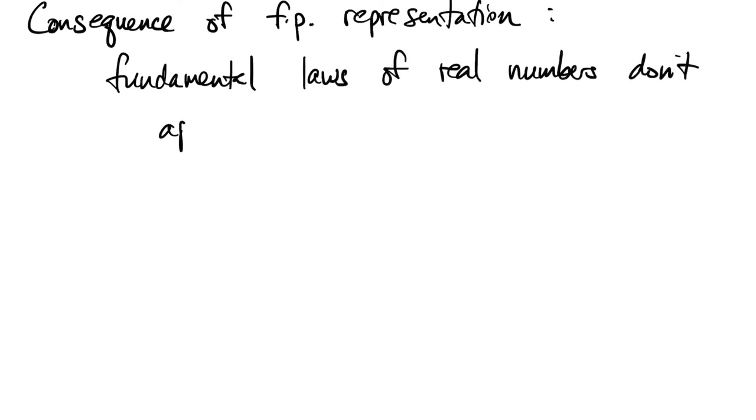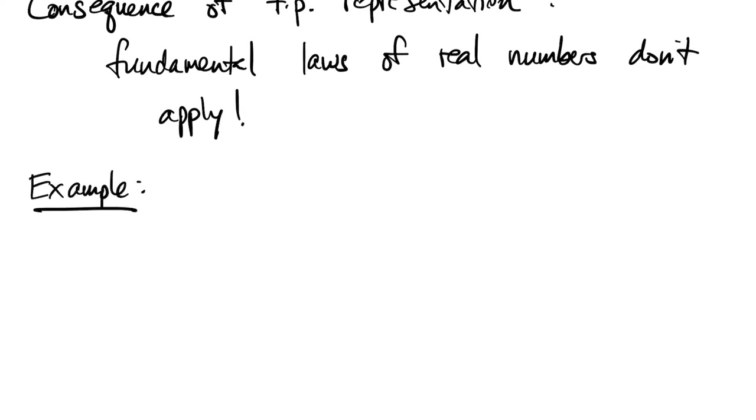For example, again, machine epsilon is the distance from 1 to the next floating point number greater than 1, so that means that the floating point value of 1 plus 1 half machine epsilon is just 1. There's nothing else there. So as a result,